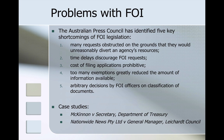That is an overview of the FOI regime in Australia at a federal level. While important, the scheme is not without its critics. The Australian Press Council has identified five key shortcomings of the FOI legislation: first, many requests obstructed on the ground they would unreasonably divert an agency's resources; second, time delays; third, costs; fourth, too many exemptions greatly reducing the amount of information; and fifth, arbitrary decisions by FOI officers on classification of documents. The textbook walks through two case studies illustrating these problems — McKinnon and Secretary of the Department of Treasury, and Nationwide News and the General Manager of Leichhardt Council.